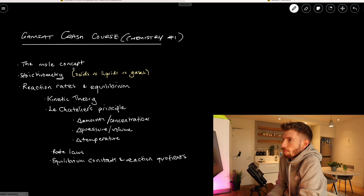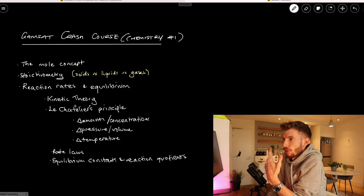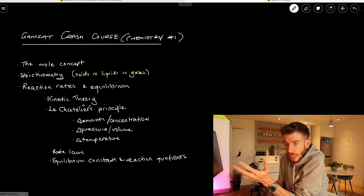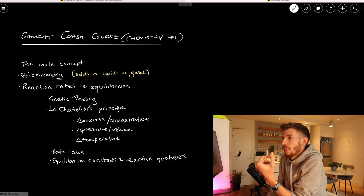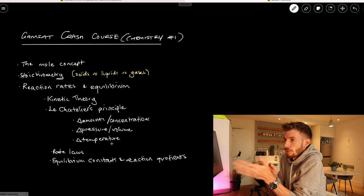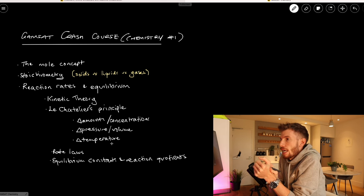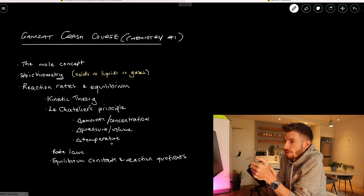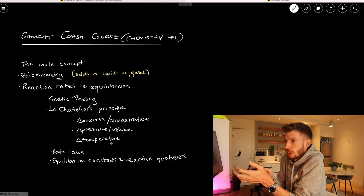As a checklist of what we'll cover: we'll start with the mole concept, then go through stoichiometry, solids, liquids, and gases very briefly, then reaction rates and equilibria in quite a bit of detail. We'll look at kinetic theory, Le Chatelier's principle, different types of changes and how they impact the position of equilibrium, rate laws as a quantitative method, and finally equilibrium constants and reaction quotients.